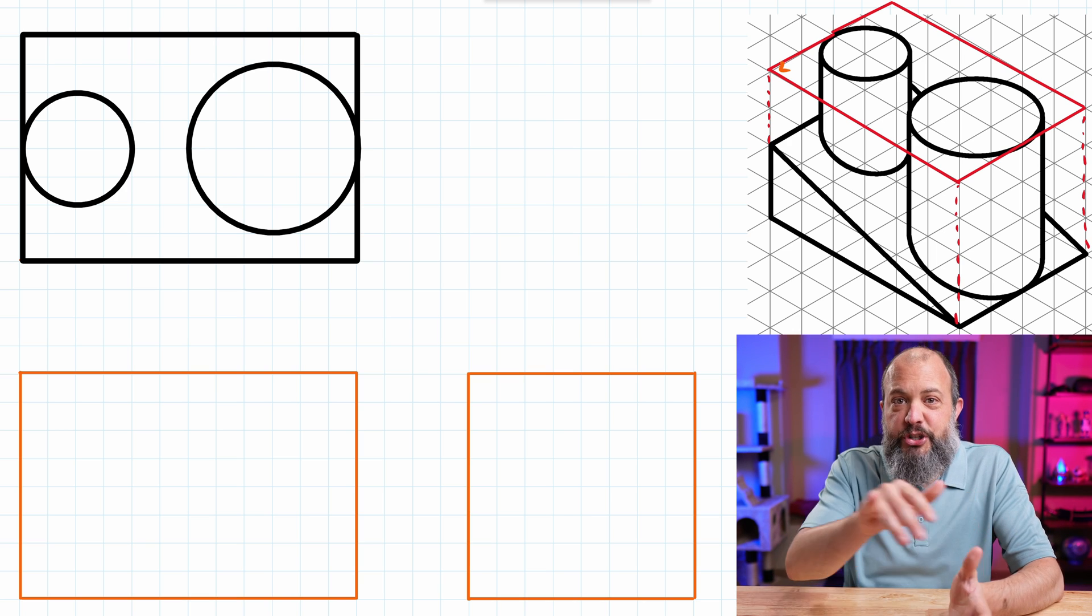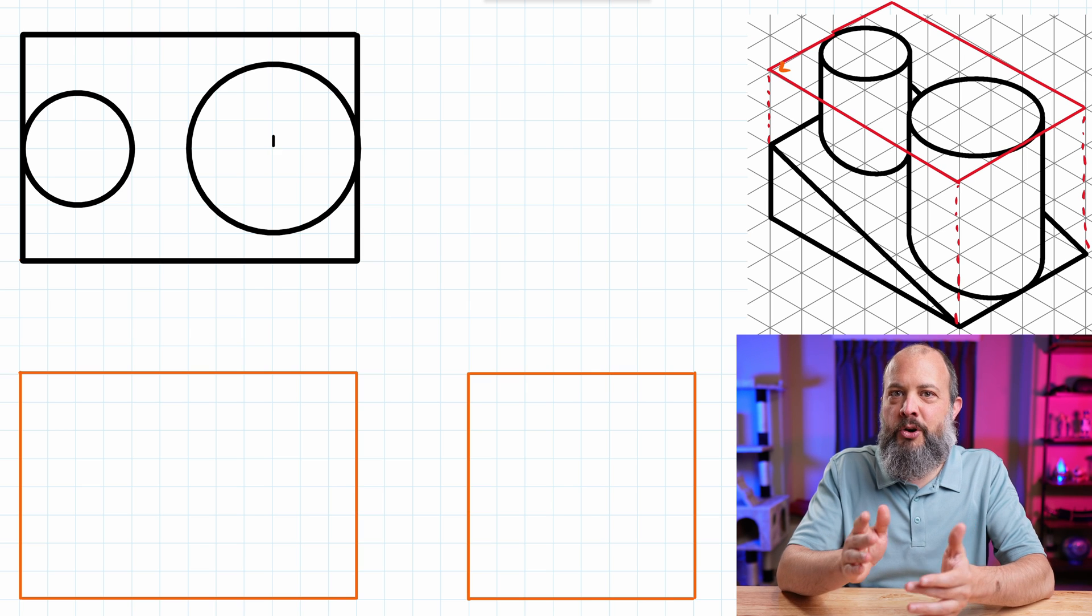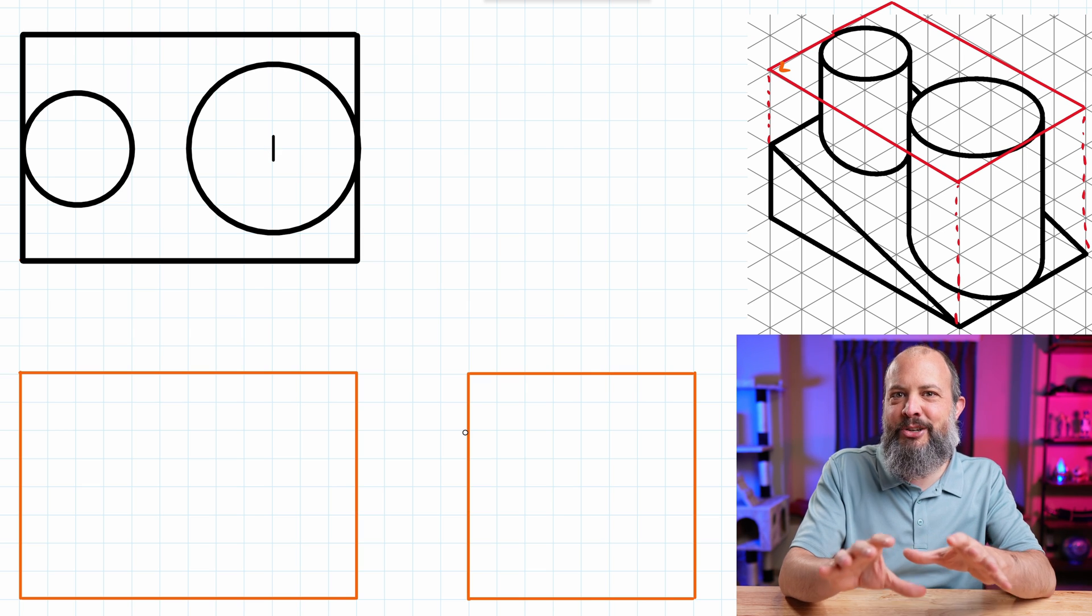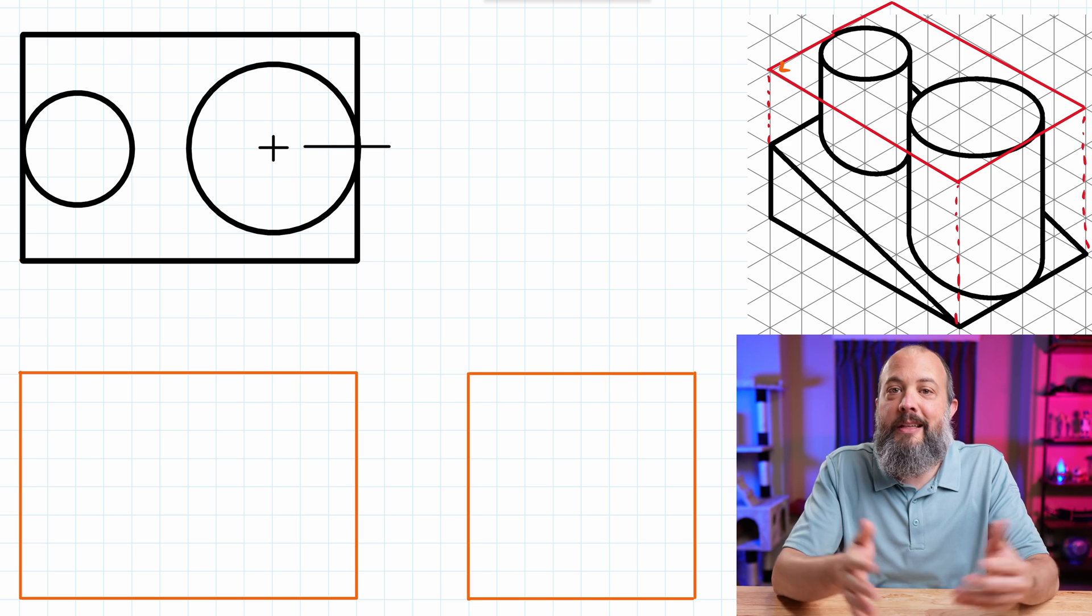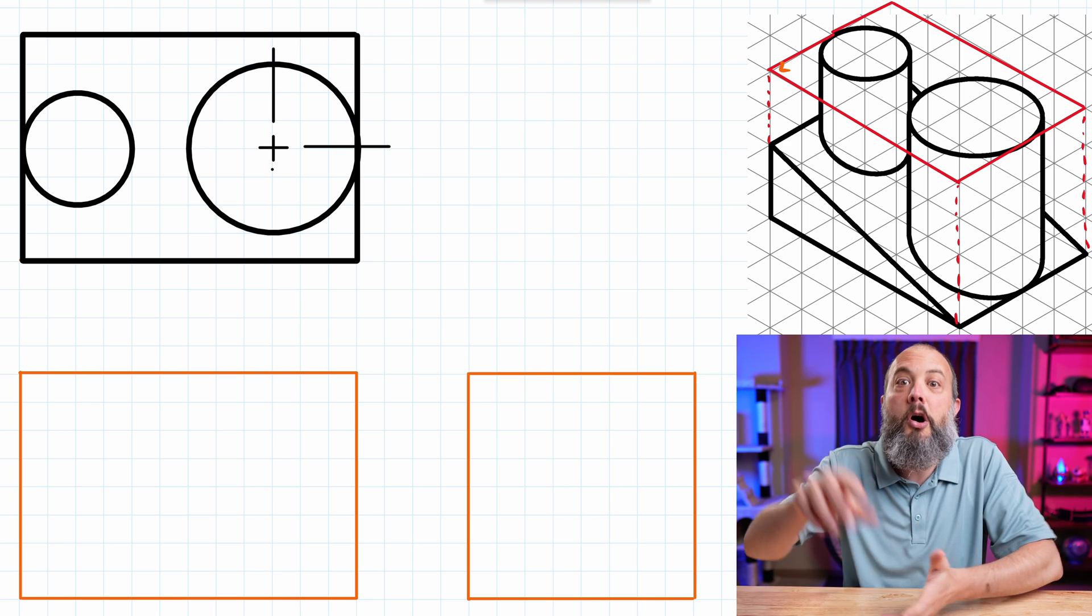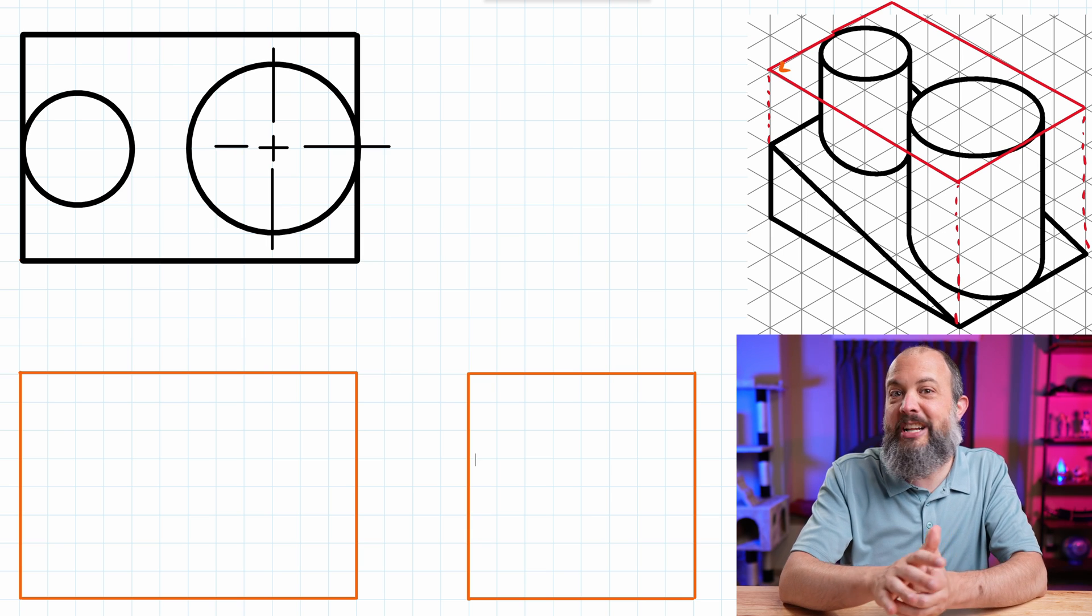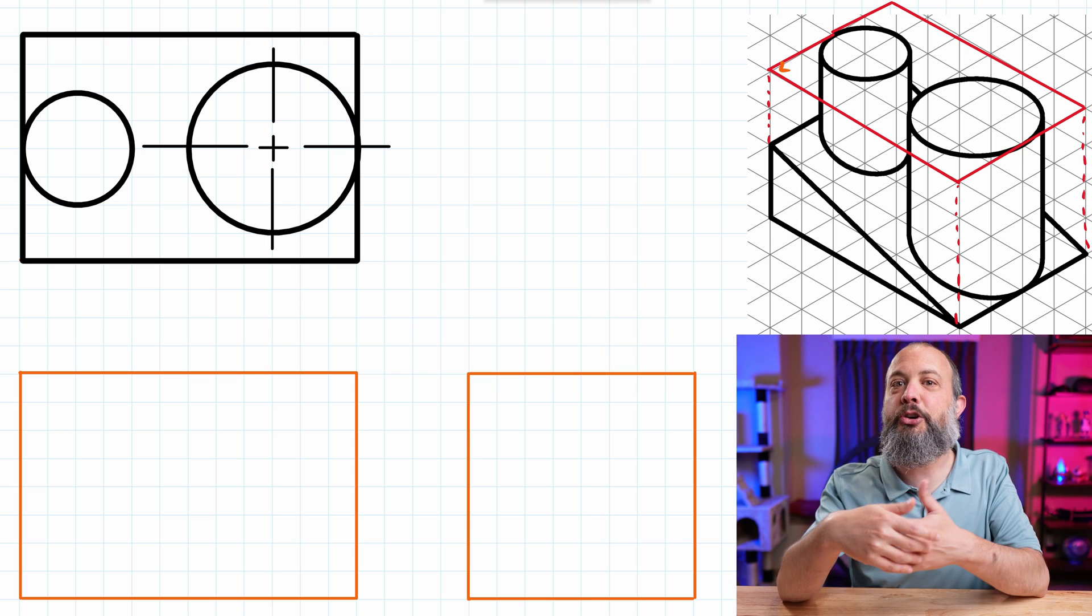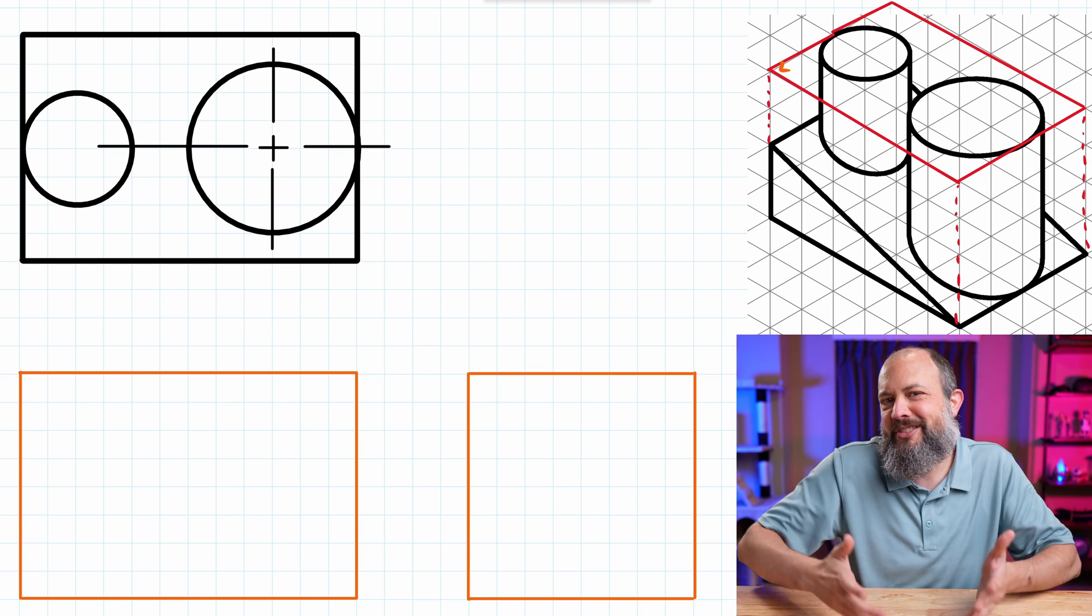Last thing to finish up this drawing will just be the center lines. Center lines are a long, short, long style line, like a dash dot style line. I'll start off by drawing a plus right in the center of each circle. And then from there, in each of the four cardinal directions, left, right, up, and down, I draw the long that goes through the circle. These long lines shouldn't end at the circle. They need to cross past the circle. Doesn't matter exactly how far past the circle. Just whatever looks good.